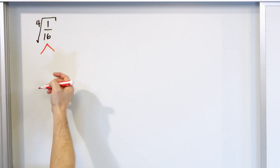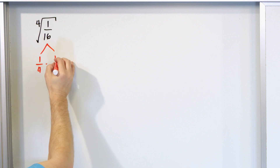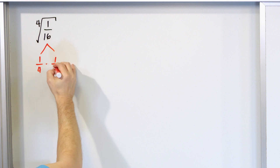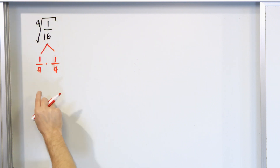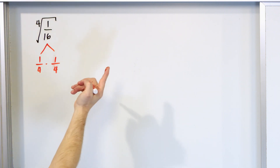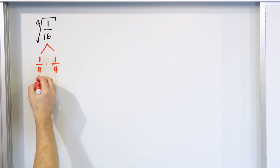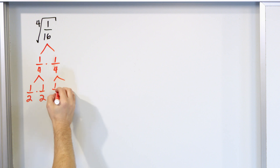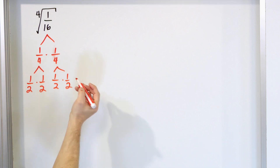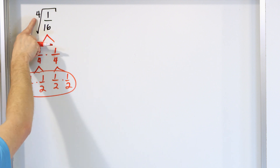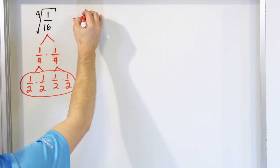You know that something times something has to equal this, and the answer that comes to mind is 1/4 times 1/4, because to multiply fractions you multiply the numerators — that gives you 1 — then multiply the denominators. But you're looking for a fourth root, not a square root, so you can't stop here. You realize that 1/4 can be written as 1/2 times 1/2, and then this will also be 1/2 times 1/2. You've found a set of four, which is what you need for a fourth root, so the answer is 1/2.